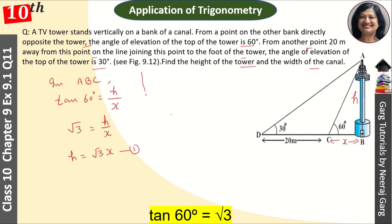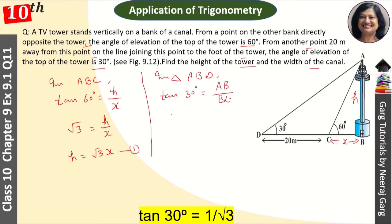Now we have triangle ABD. Tan 30 degrees equals AB upon BD. Tan 30 degrees value is 1 upon √3. AB is H and BD is 20 plus X.